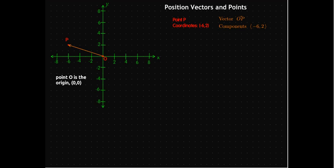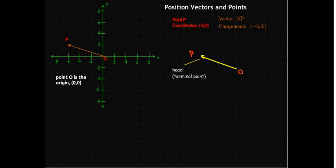It will have components negative 6 comma 2. This gives us a geometric representation of a vector as an arrow. It has a head, which is actually its terminal point, the ending point, and it has a tail, where it starts, or the initial point.